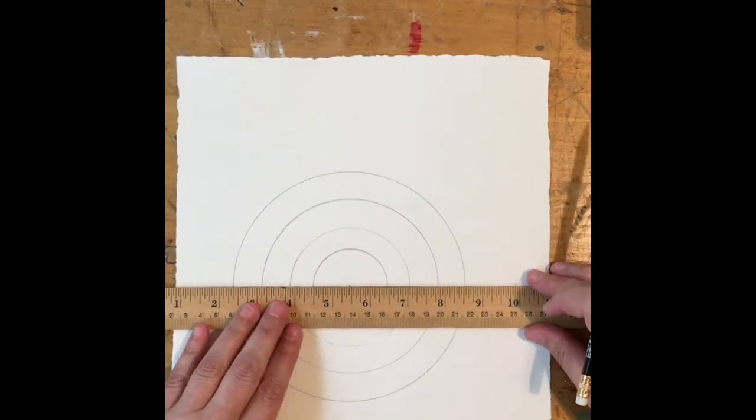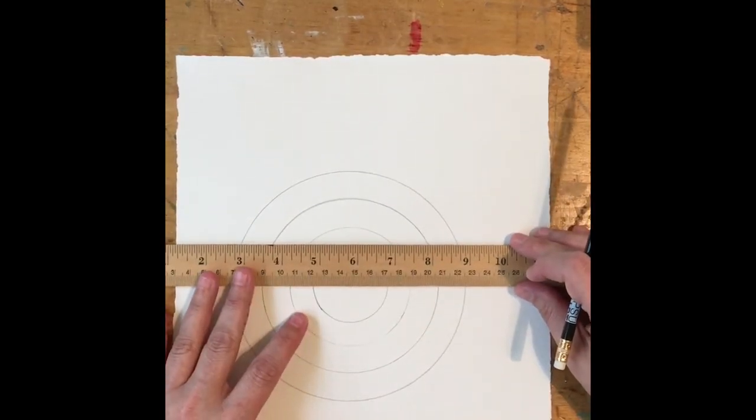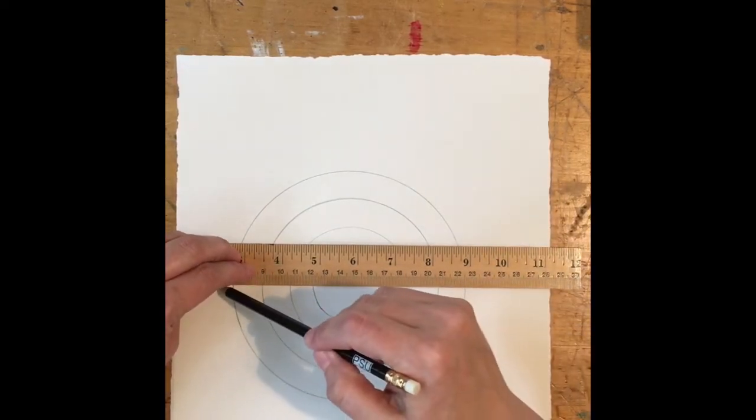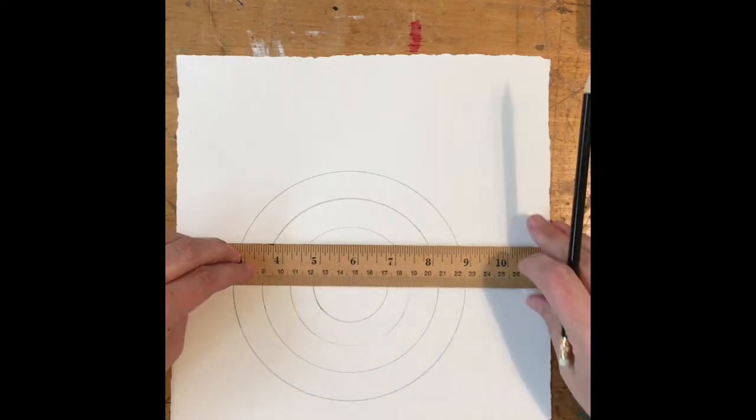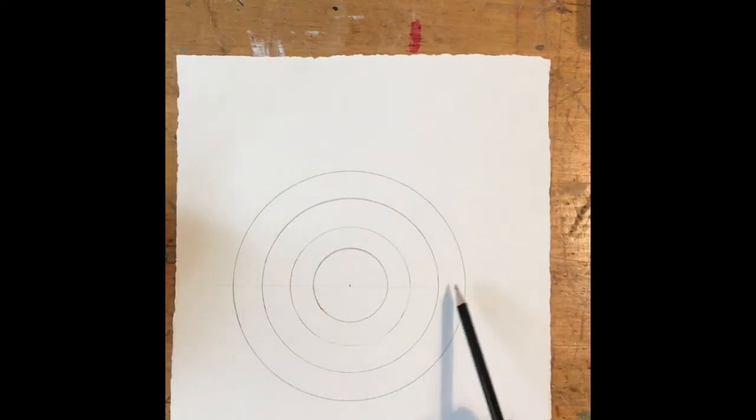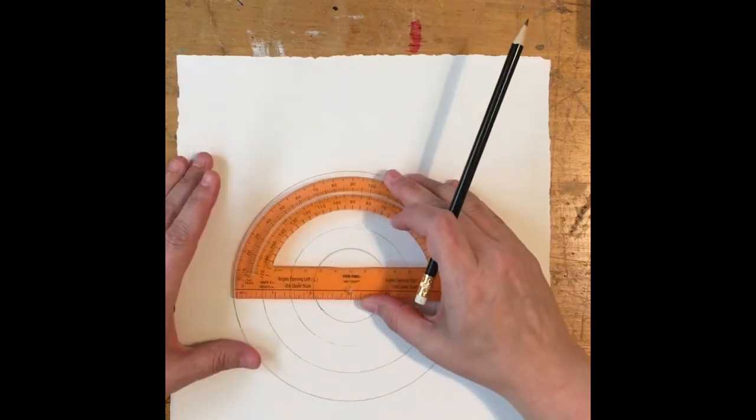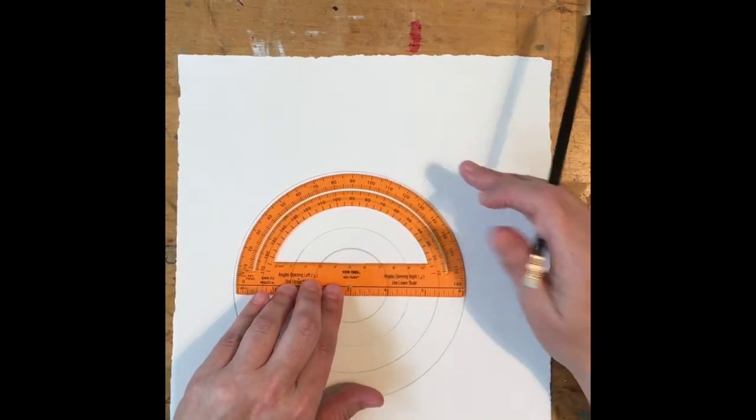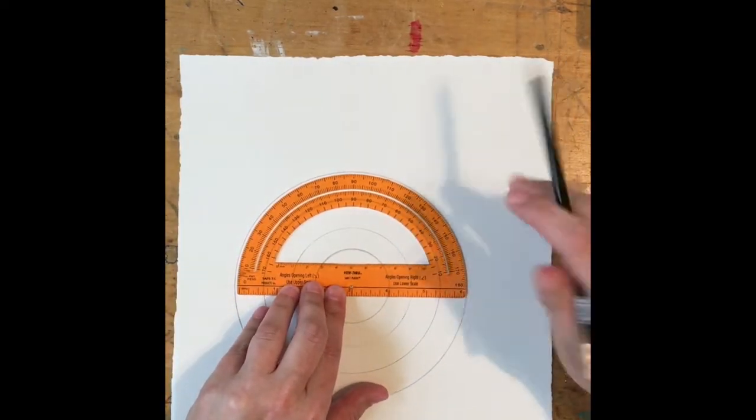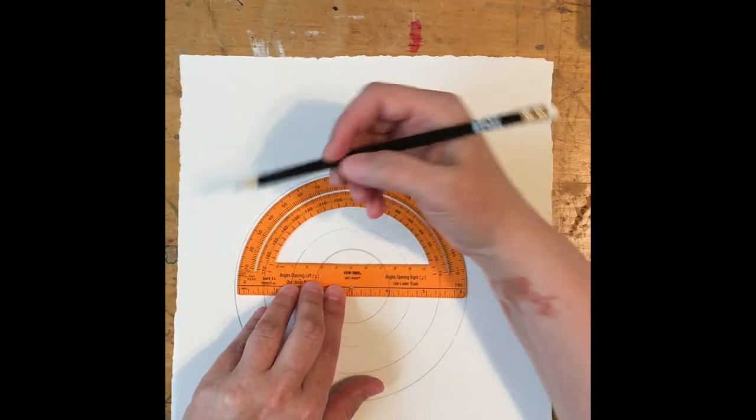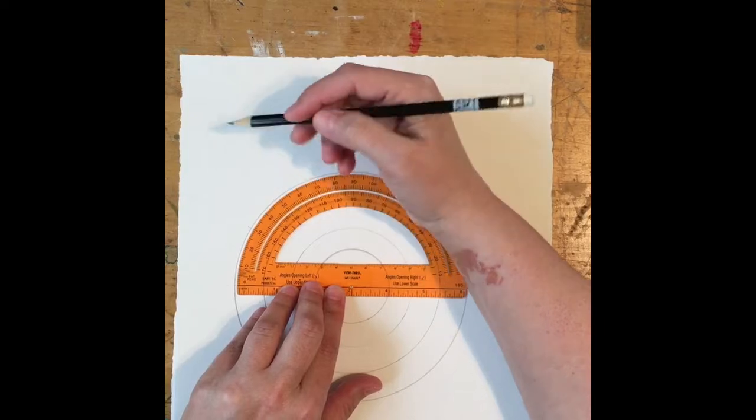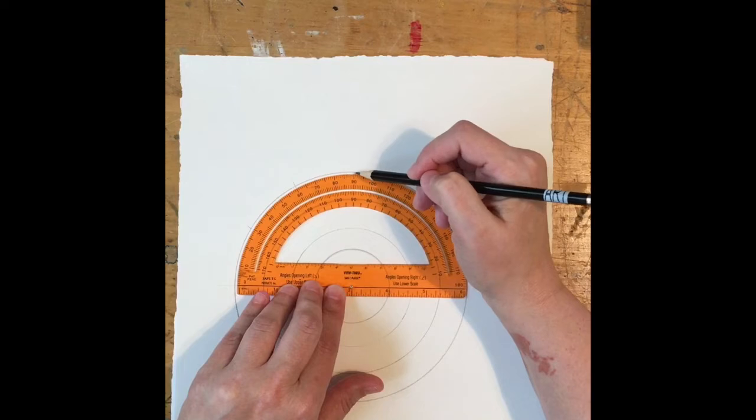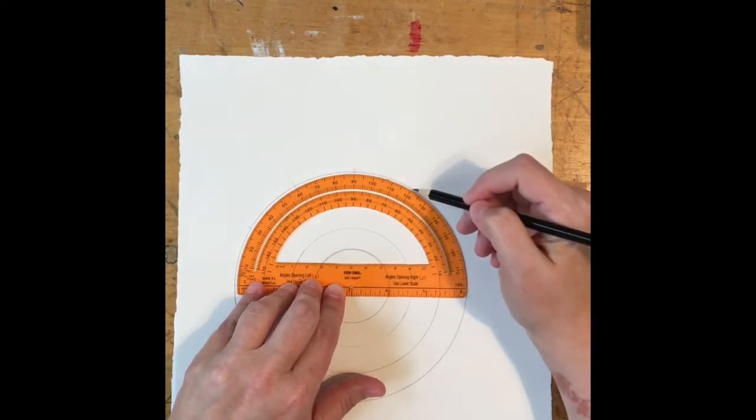I've drawn that line and that line is going to help us because I am going to use my protractor here and I'm going to mark it off for my degrees. So I'm going to mark every 30 degrees. So here is 30, so I'm going to make a little dash right there. And then I'm going to make a dash at 60 and make one at 90, make one at 120, make one at 150.